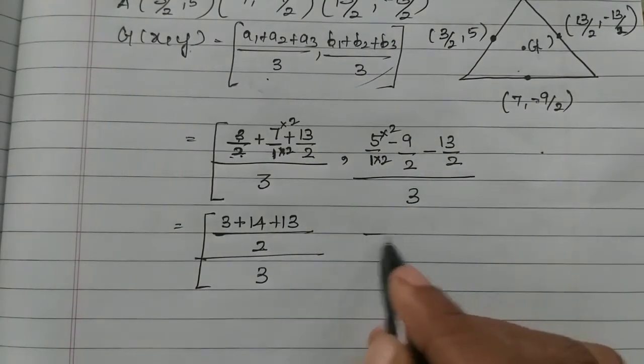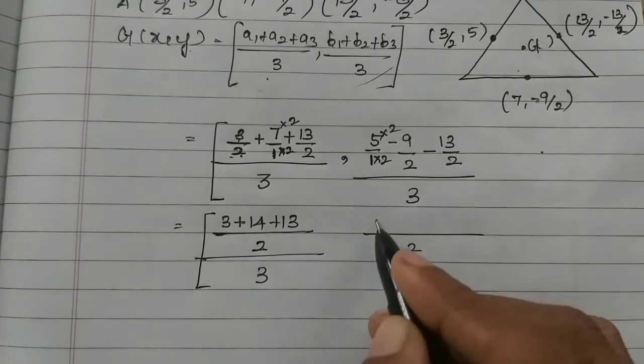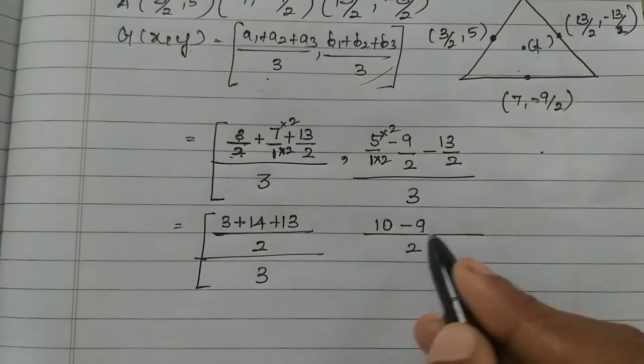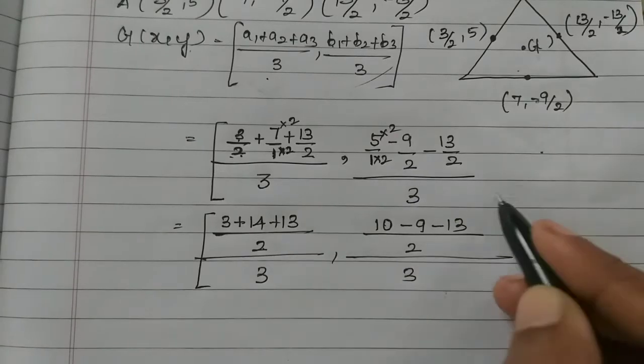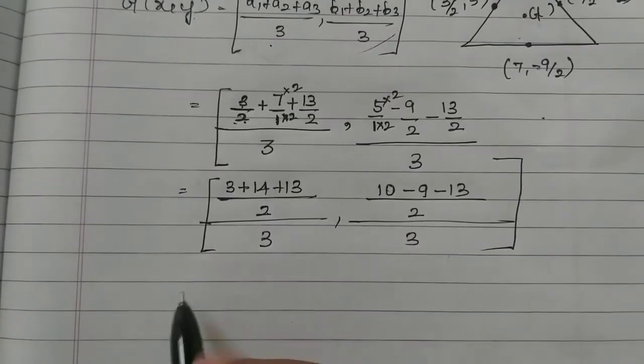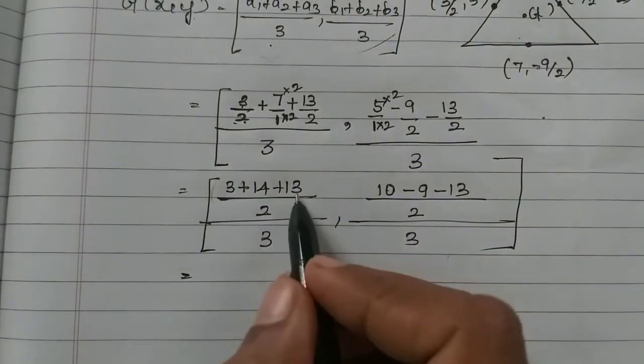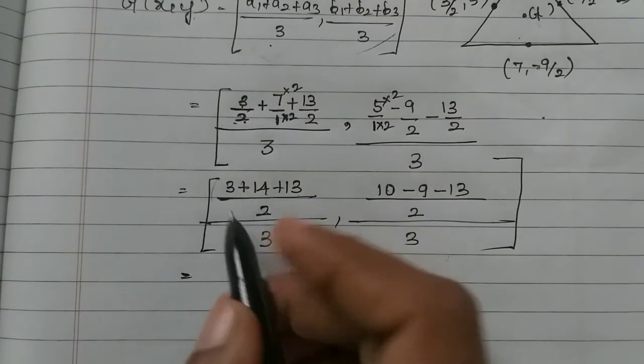Okay, so here we have 2 is common. 5, 2 is 10 minus 9 minus 13 divided by 3. Okay, so what do we do in the numerator? Let's add numbers: 13 plus 14, 27 plus 3, 30.